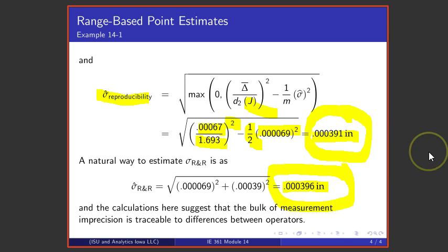The reproducibility variation seems to be very much smaller than the repeatability variation. This is a context in which it appears that improving operator training or providing some kind of standard operating procedures might improve measurement consistency by reducing differences between operators.